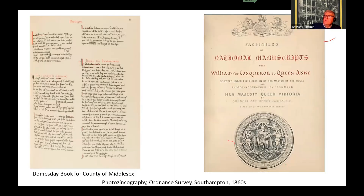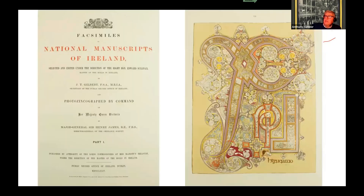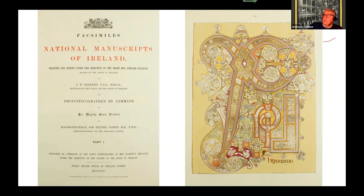Photo zincography: rather than lithographic stone, it's on a zinc plate. It was used to reproduce the Domesday Book — an important 11th-century national manuscript — and other manuscripts. These were taking place in the Ordnance Survey in Southampton in the 1860s, later moving on to National Manuscripts of Ireland. These are particularly important because the manuscripts from which they came were all destroyed in a fire in 1922 in the Dublin Record Office. The work cost 15 times the ordinary cost of reproducing manuscripts, because each colour had to be applied by hand onto the photolithographic original.